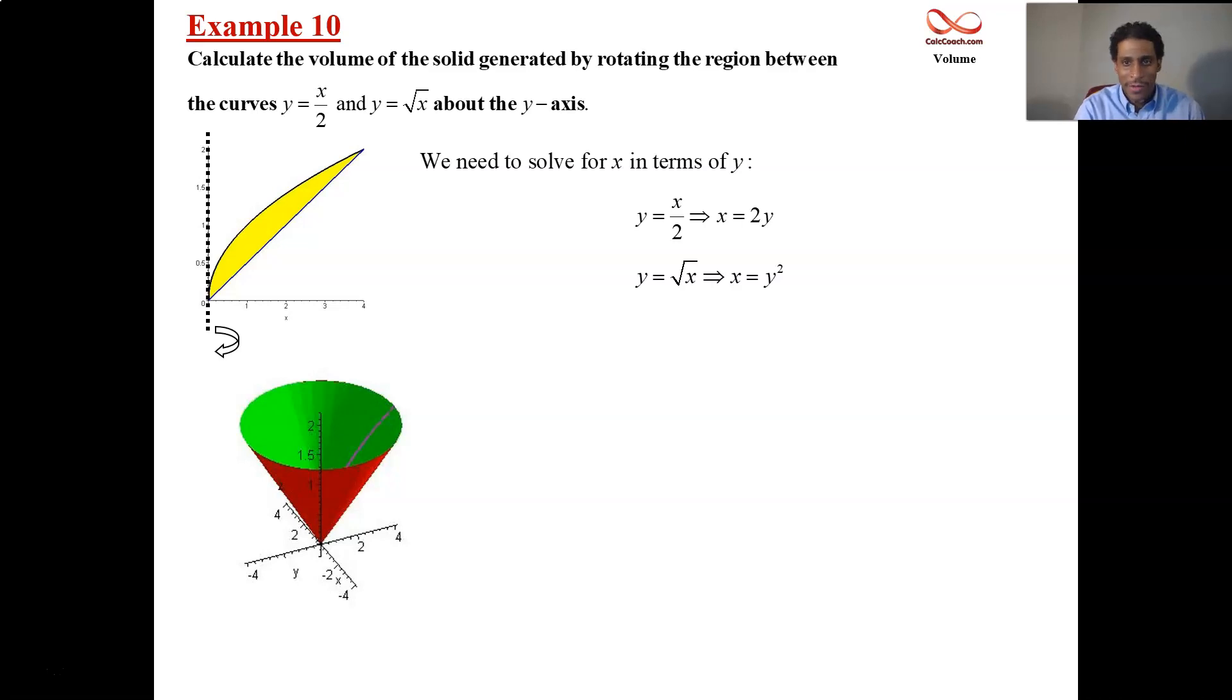So to find the inner radius and the outer radius, we're going to make sure that we just come off the axis and go through the region for the outer radius. Come off the axis and go up just to the region for the inner radius. The closer curve is the x equals y squared, the further away line is x equals 2y. Go from the axis through the region to get the outside radius 2y. Go from the axis just up to the region to get the inside radius y squared.